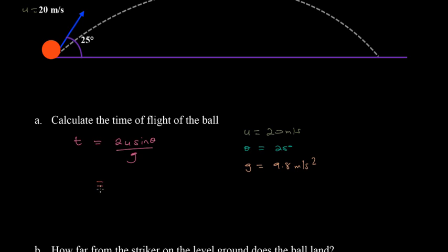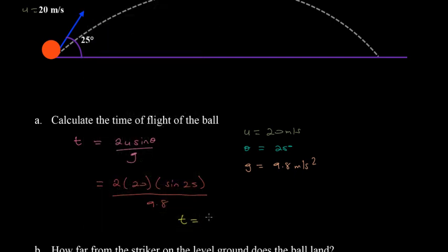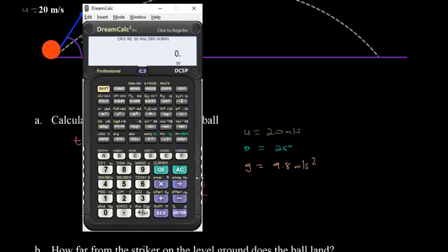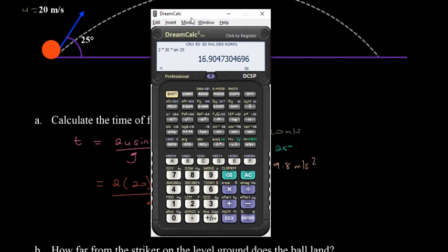We're going to plug in the values. We're going to say 2 times u which is 20, times the sine of θ which is 25, and we're dividing that by 9.8. Let's simplify this: 2 times 20 times the sine of 25, and that works out to be 16.9, and we're dividing that by 9.8.